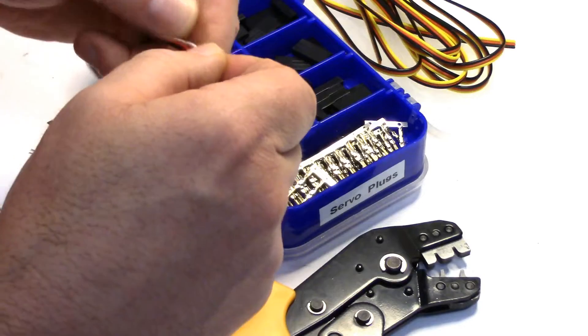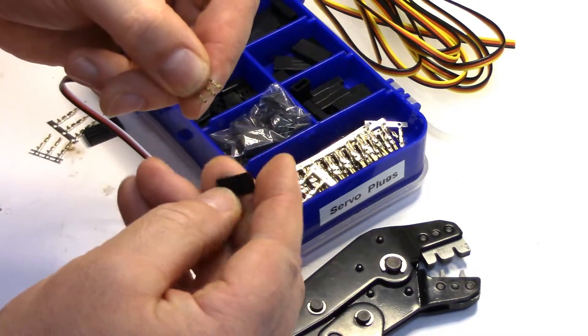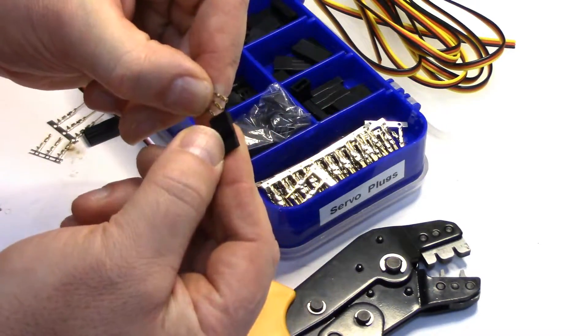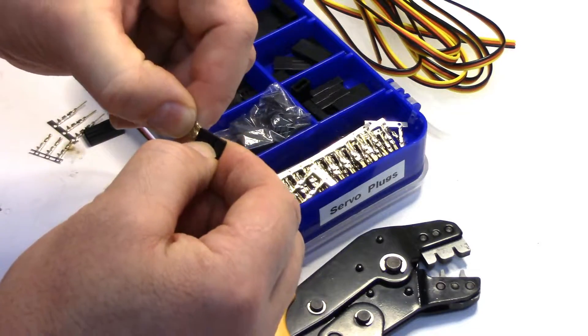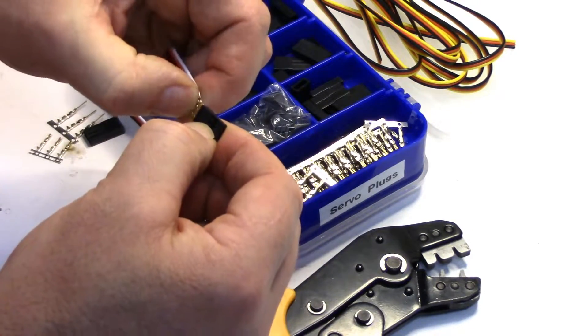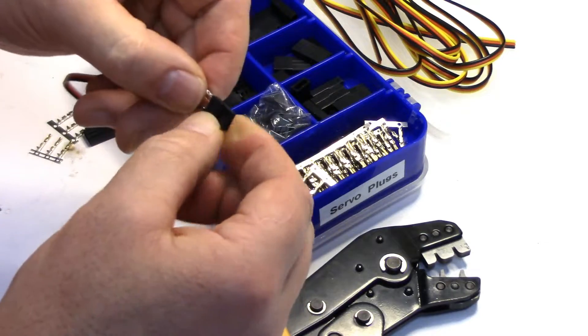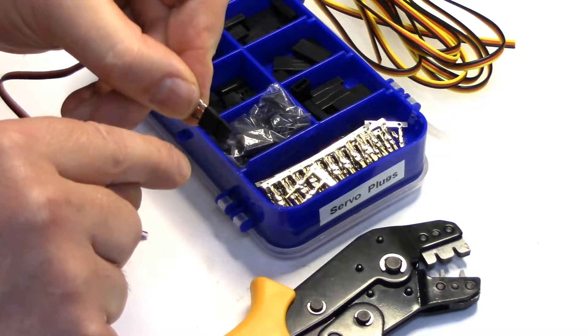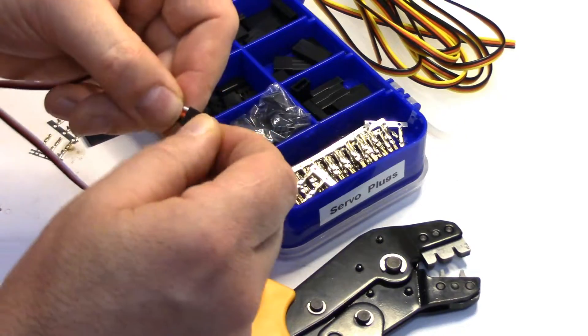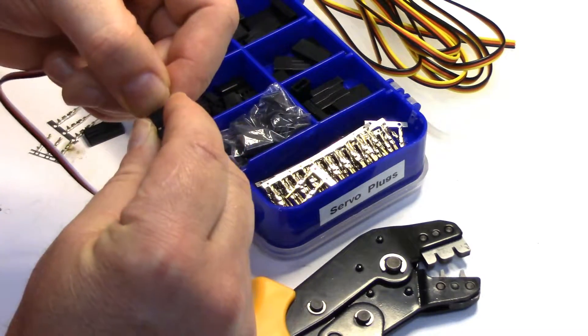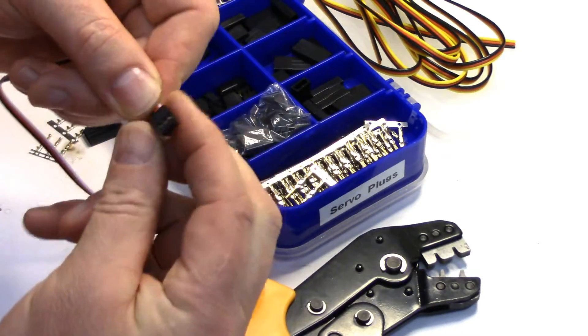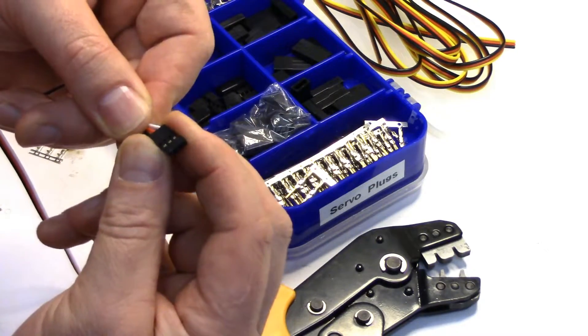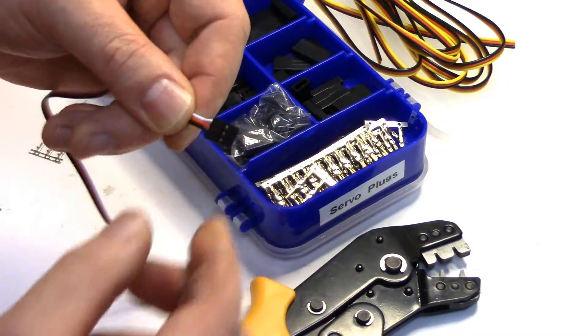It's generally easiest. Put them all in at once. Again, black will be on the bottom here. White's on the top. Red's always in the center. And you hear them click. And then just pull to make sure they don't come out. So there's our male end done.